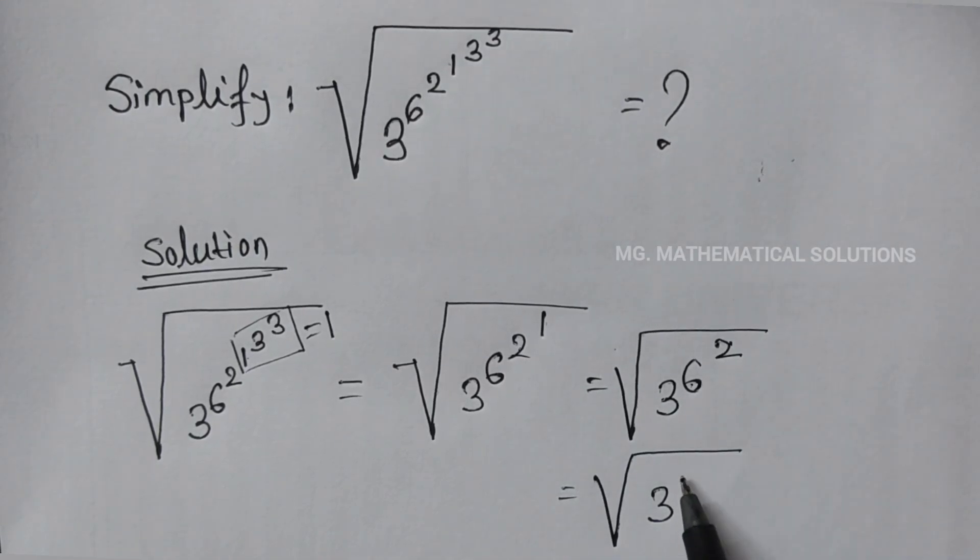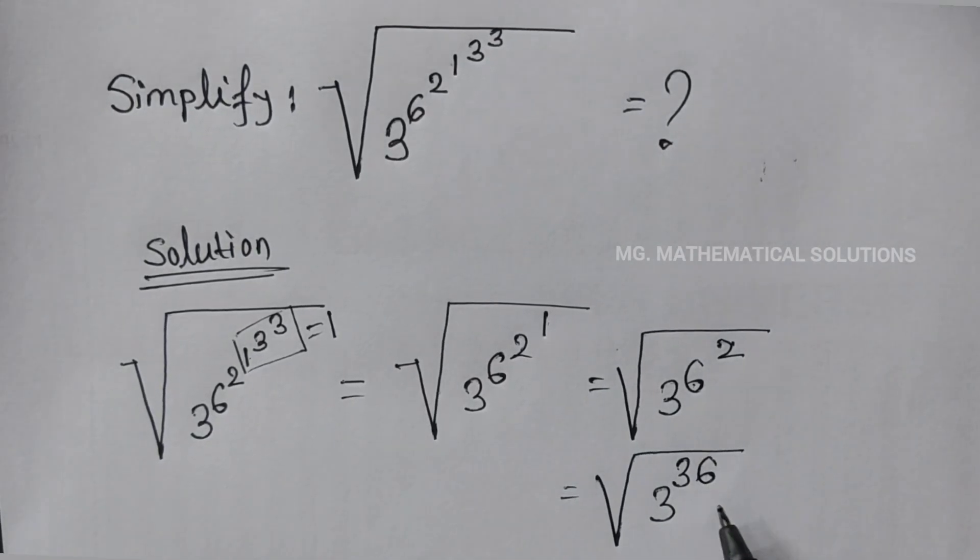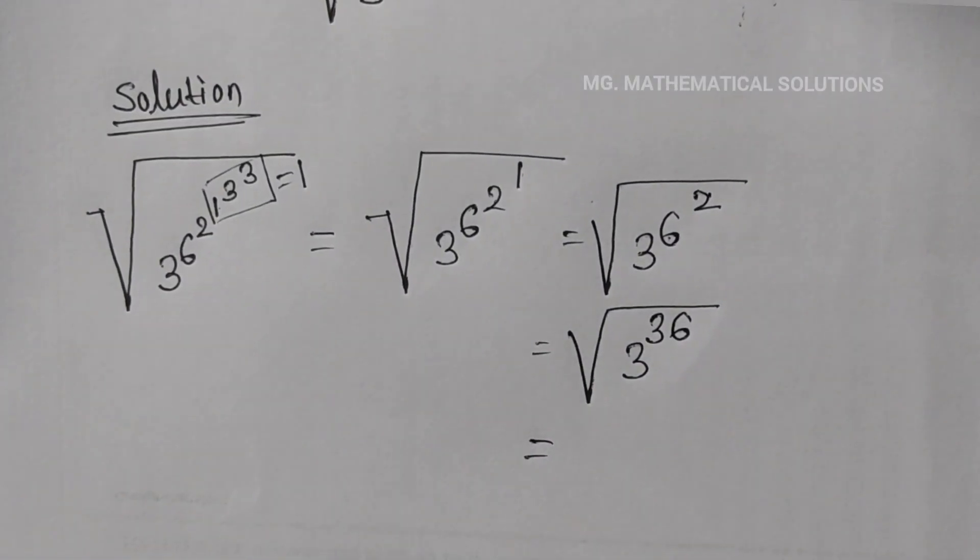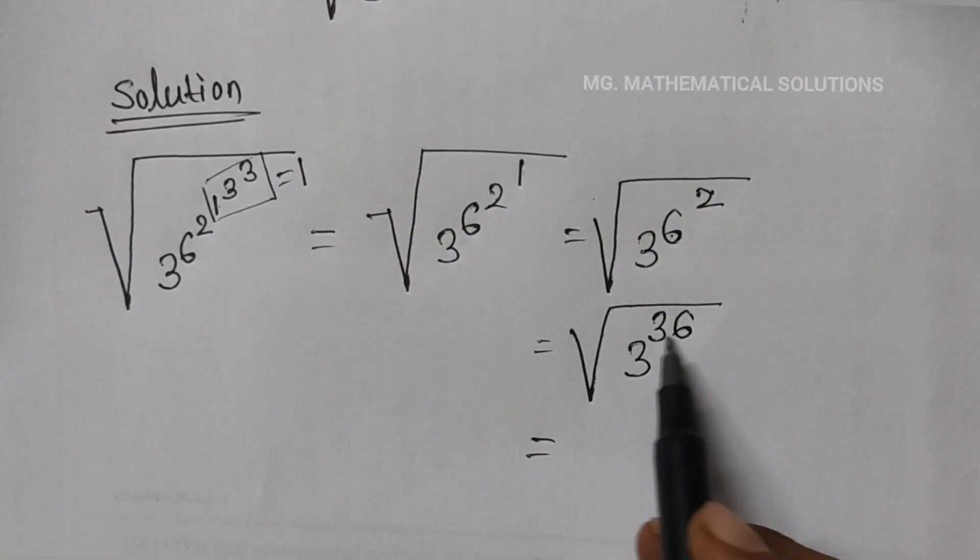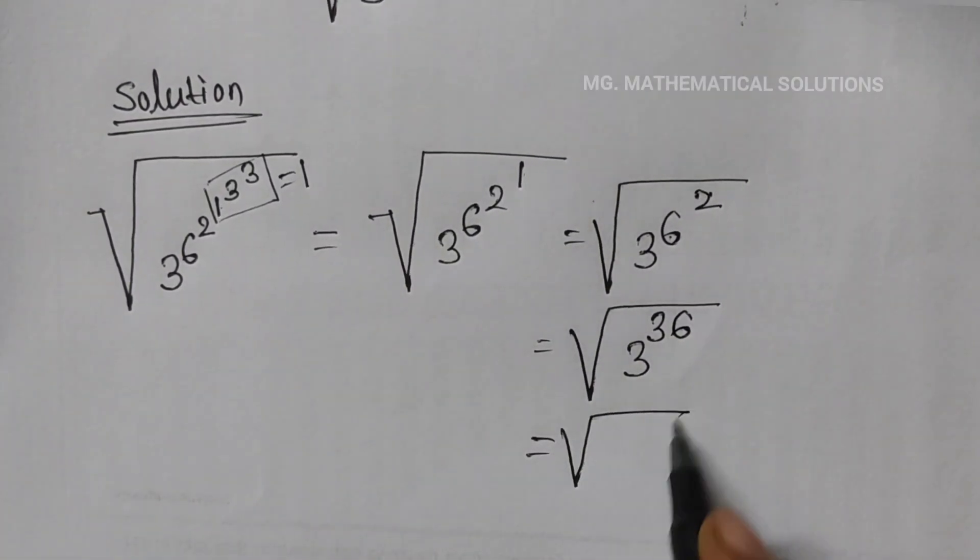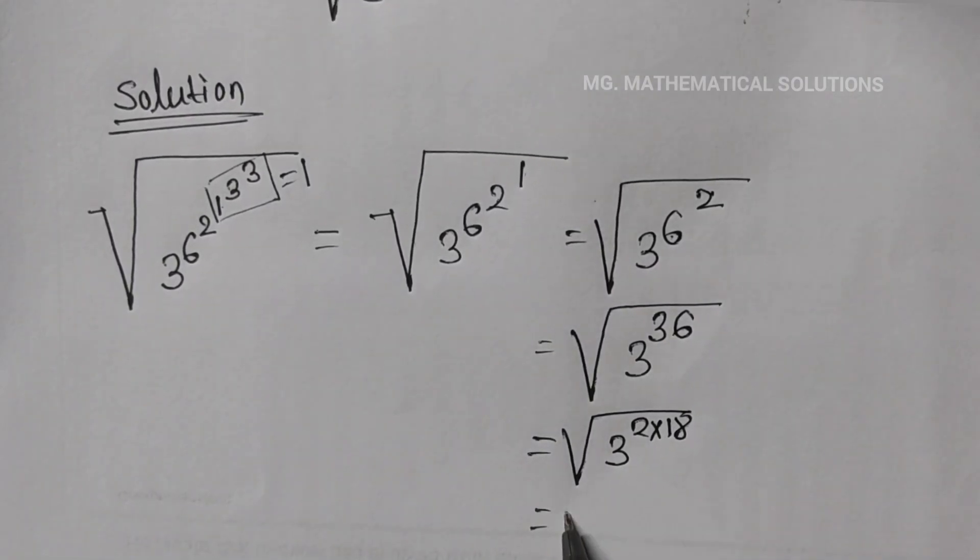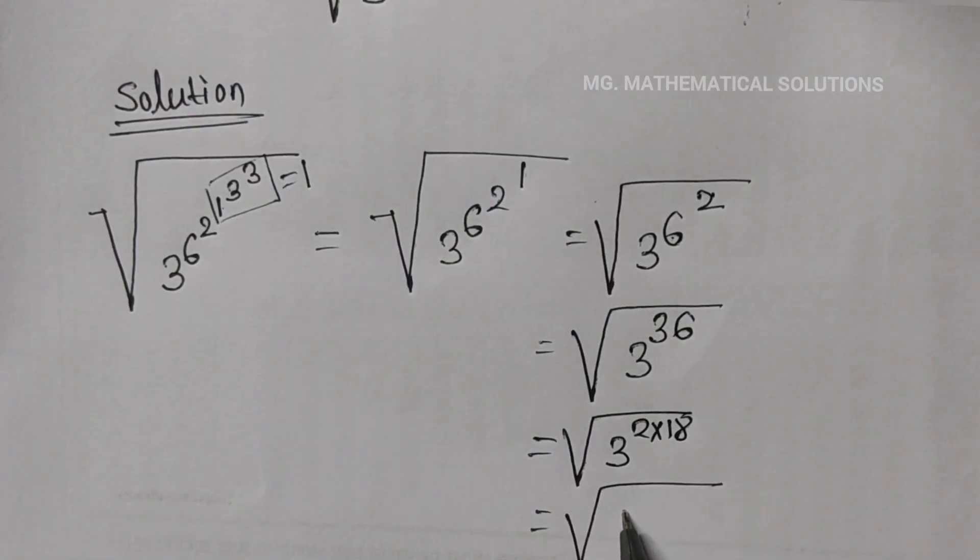We can write 36 as 2 into 18, so this equals root over 3 to the power 18, whole to the power 2.